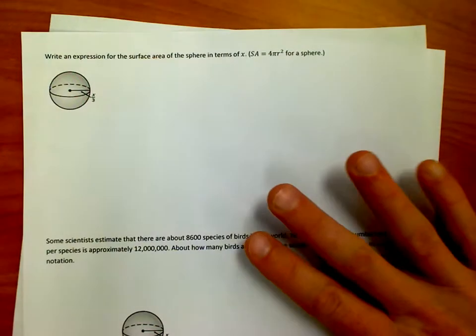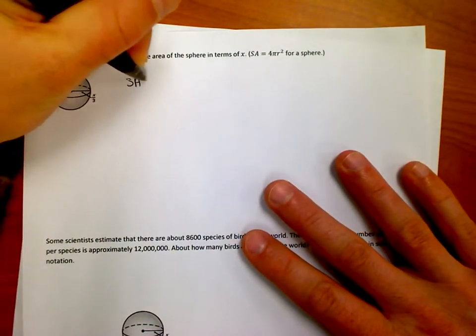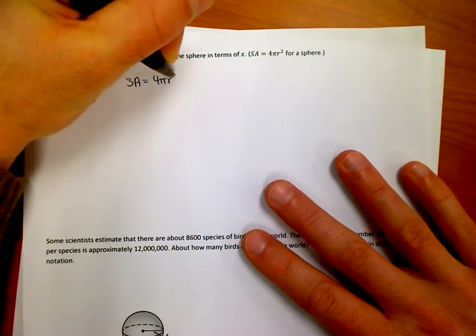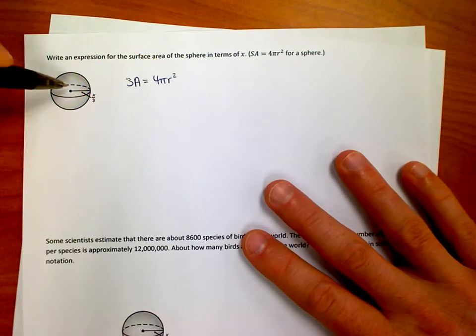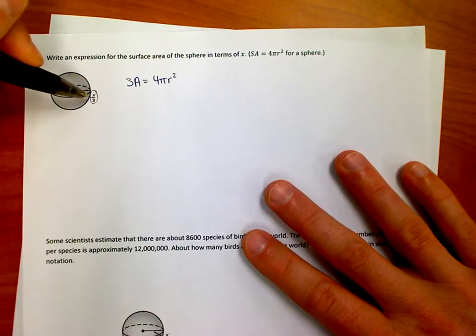And basically all it's saying is this, if we know that the surface area is 4 pi r squared, and we know that this is the radius, the radius is x over 3, we're going to replace r with x over 3.